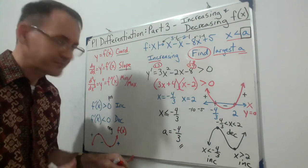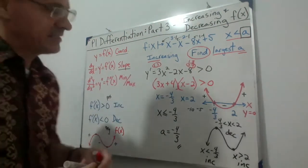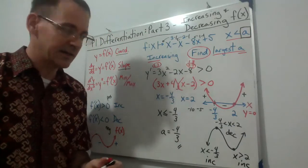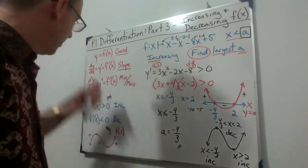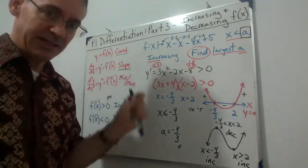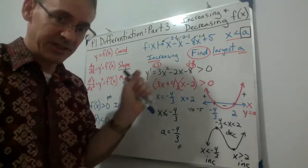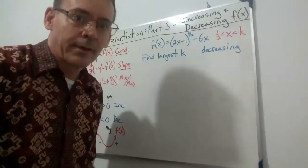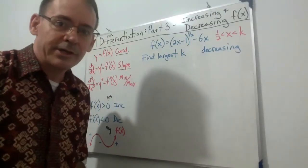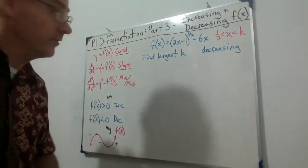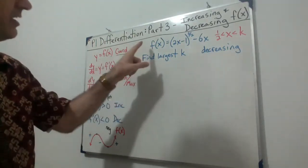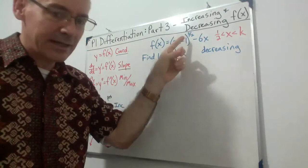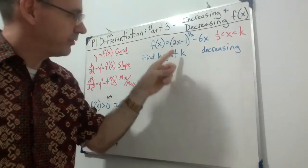That's how we do it. We'll look at a few more examples without going through the full explanation again. Here's our second example: a function with an interesting fractional exponent — (2x − 1)^(3/2) − 6x.